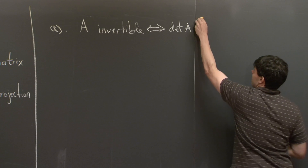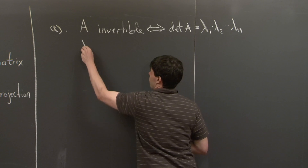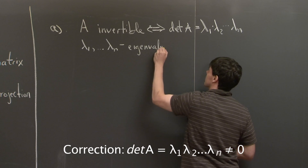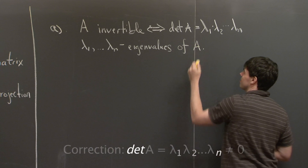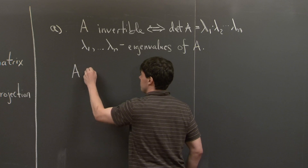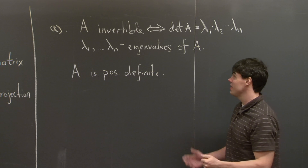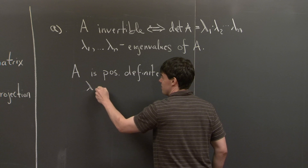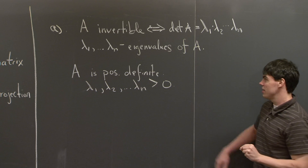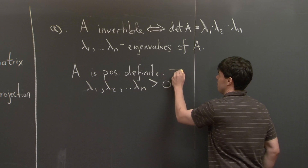I'm going to write the determinant of A as the product of the eigenvalues of A — lambda 1 to lambda n. Now, if A is positive definite, what does this say about the eigenvalues of A? It says that each eigenvalue, lambda 1, lambda 2, ..., lambda n, must each be bigger than 0. This statement — that each eigenvalue is bigger than 0 — is completely equivalent to A being positive definite, for symmetric matrices A.